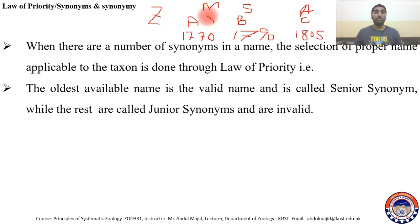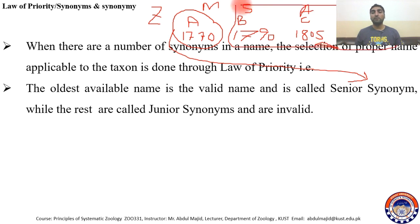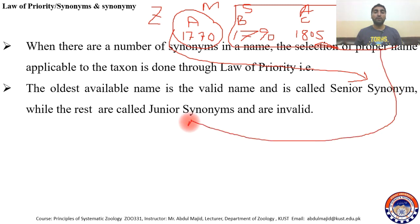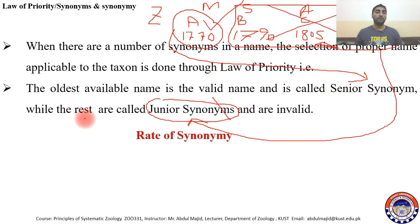The name given by Muhammad is the senior synonym, while all the rest — B, C, D — are junior synonyms and are invalid. Only the senior synonym will be selected as the correct name, and all others will be rejected.